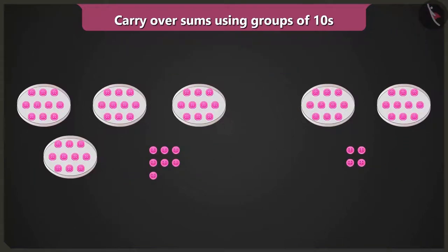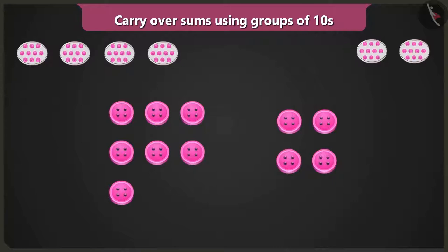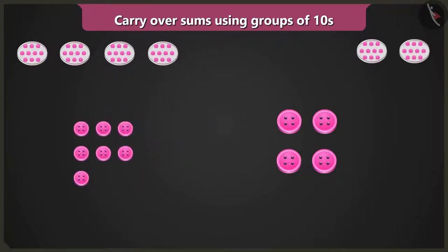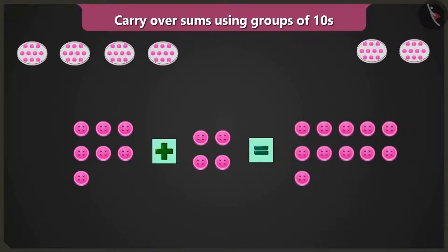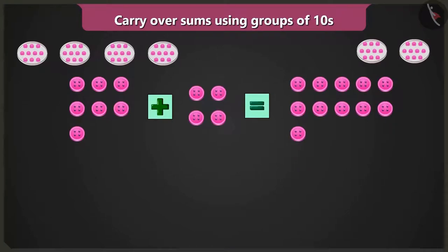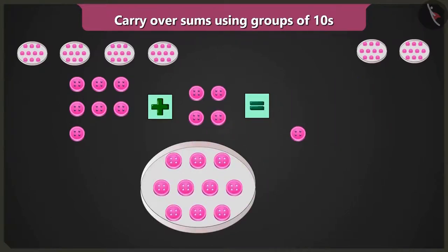To find that out, I will first count the loose buttons. Here we add 7 buttons to 4 loose buttons and get 11 buttons. Out of these 11 buttons, if I make a group of 10 buttons and keep them on this plate, then I will be left with one loose button.